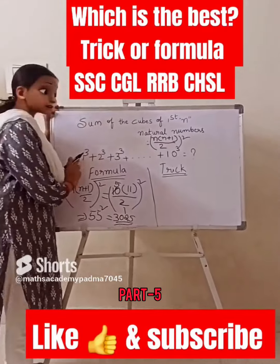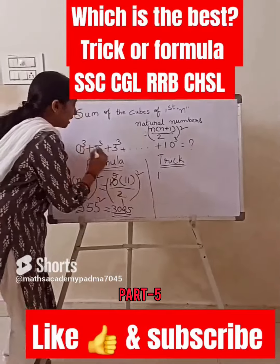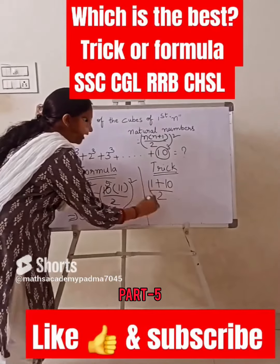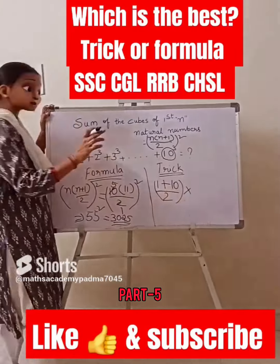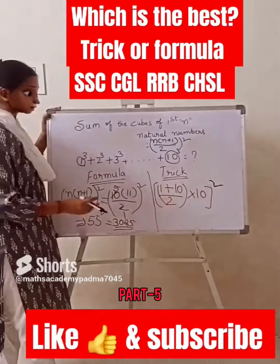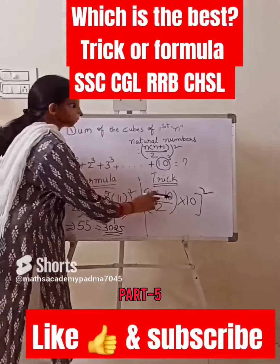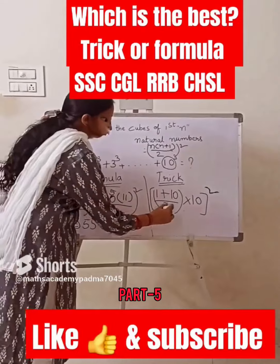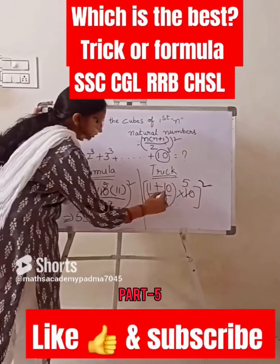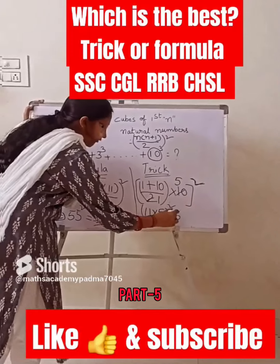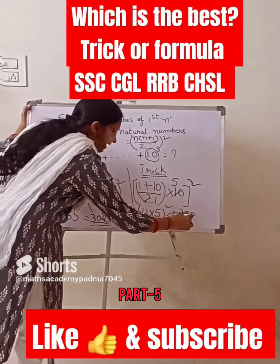We also have a trick: take the first term 1 plus last term 10, divide by 2, then multiply by the number of terms — that gives 1 plus 10 equals 11, and 11 times 5 equals 55. So 55 whole square equals 3025.